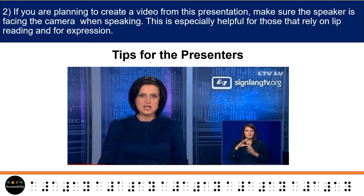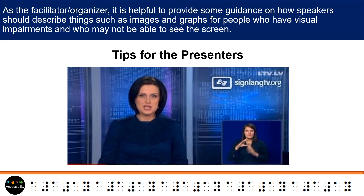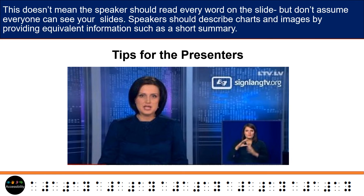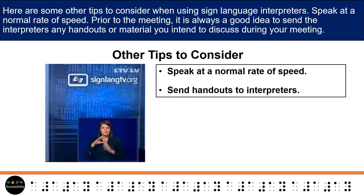3. This is especially helpful for those that rely on lip reading and for expression. As the facilitator/organizer, it is helpful to provide some guidance on how speakers should describe things such as images and graphs for people who have visual impairments and who may not be able to see the screen. This doesn't mean the speaker should read every word on the slide, but don't assume everyone can see your slides. 4. Speakers should describe charts and images by providing equivalent information such as a short summary.